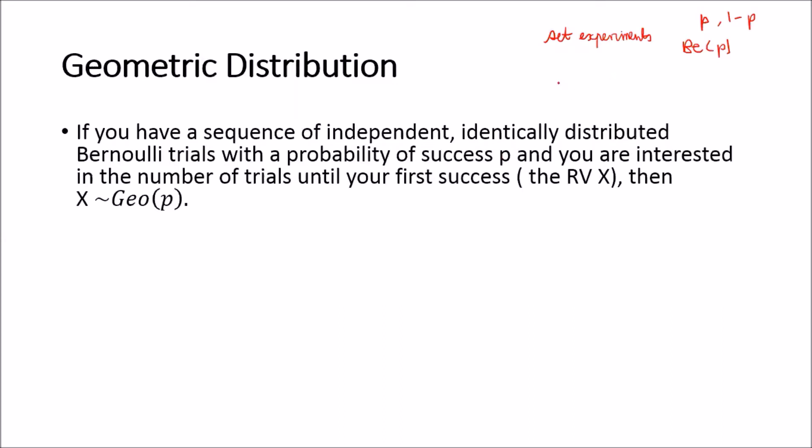So the example I want you to have in mind is we flip a coin. So the coin can be heads or it can be tails and we keep flipping this coin until we observe our first head. Then the number of trials, so the number of flips till the first head will follow the geometric distribution.